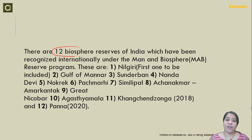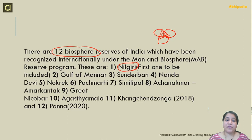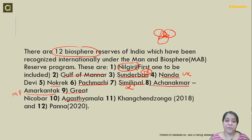There are 12 Biosphere reserves of India that are internationally recognized under the Man and Biosphere Reserve program. Nilgiri was the first one included, spanning Kerala, Tamil Nadu, and Karnataka. Next is Gulf of Mannar in Tamil Nadu, Sundarbans in West Bengal which is also a tiger reserve, Nanda Devi in Uttarakhand, Nokrek, Pachmarhi, Simlipal in Odisha, Achanakmar-Amarkantak in Madhya Pradesh, Great Nicobar, Agasthyamalai in Kerala, and Kanchenjunga in Sikkim — which was recently recognized in 2018.